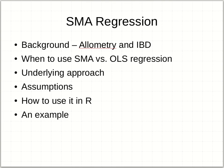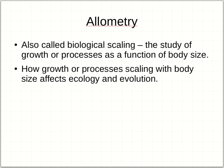I'll walk briefly through the underlying approach without spending time on equations. The assumptions, which we need to think about with every statistical test, are very similar to ordinary least squares regressions for some, but differ in a few important ways for others. I also have an example on how we can use it in R — it's actually quite simple. There's a nice package that helps make that happen. So what is some of the background? It's been used quite commonly in the discipline called allometry.